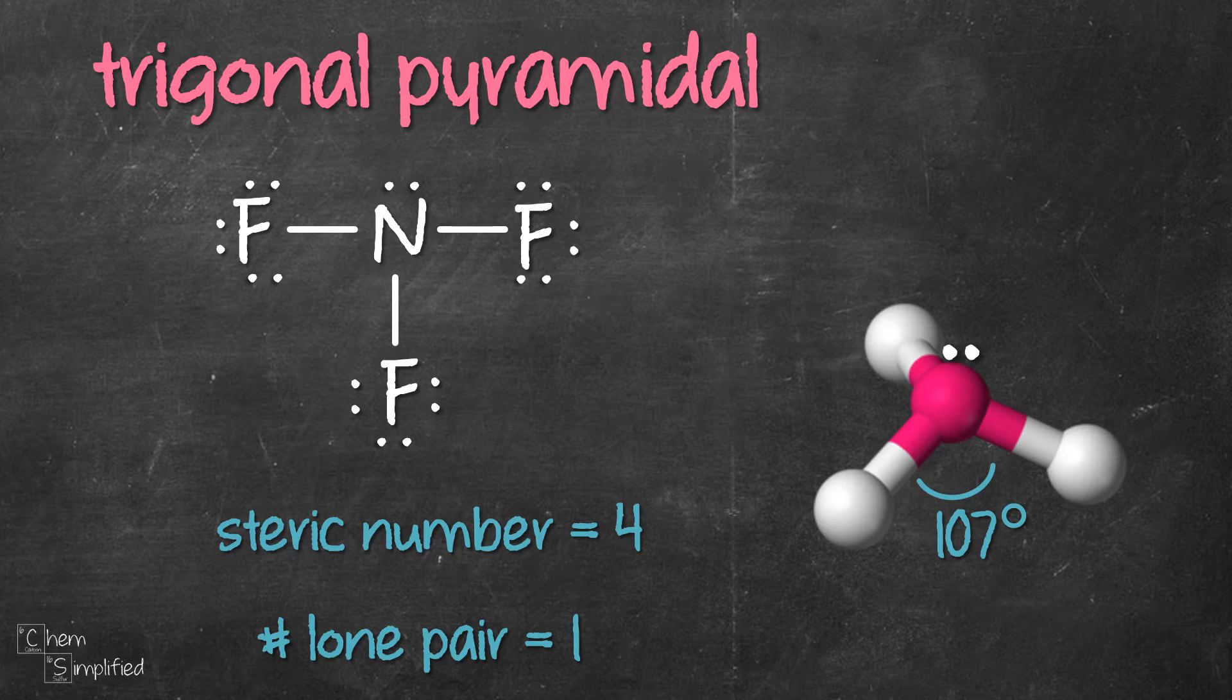Now trigonal pyramidal is very related to tetrahedral. It's like you have tetrahedral and you take out one of the groups in tetrahedral and you replace that with a lone pair and you get yourself a trigonal pyramidal. But because of the electron repulsion of the lone pair, the bond angle in trigonal pyramidal will get reduced slightly. So rather than 109.5, it's now 107 degrees.